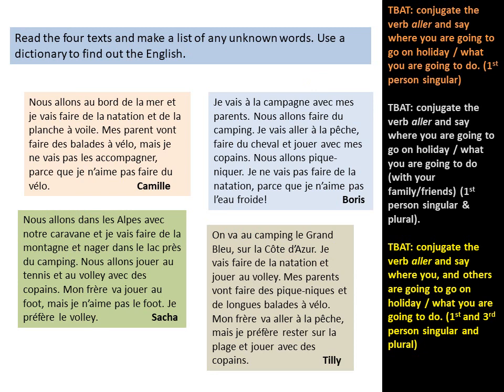Now read the four texts and make a list of any unknown words. Use a dictionary to find out the English. You could use an ordinary paper dictionary, or if you're using a computer or your phone, I'd suggest Word Reference — it's the best dictionary.